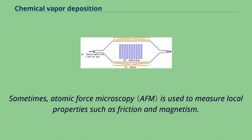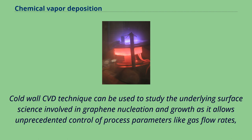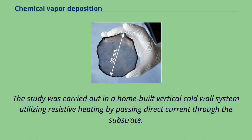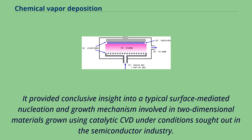Cold wall CVD technique can be used to study the underlying surface science involved in graphene nucleation and growth, as it allows unprecedented control of process parameters like gas flow rates, temperature, and pressure. A recent study was carried out in a home-built vertical cold wall system utilizing resistive heating by passing direct current through the substrate. It provided conclusive insight into a typical surface-mediated nucleation and growth mechanism involved in two-dimensional materials grown using catalytic CVD under conditions sought out in the semiconductor industry.